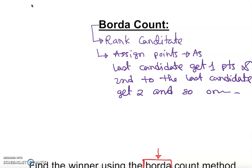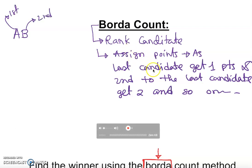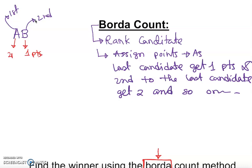Now, how do we rank them? If I have two candidates — first position and second position — by the Borda Count method, anyone who shows up in second place gets one point, and anyone who shows up in first place gets two points, since there are only two candidates.